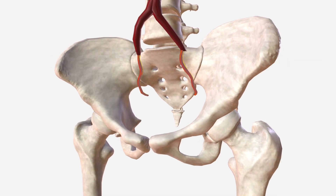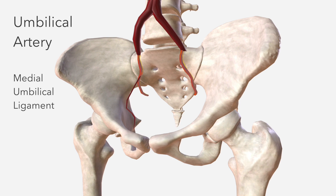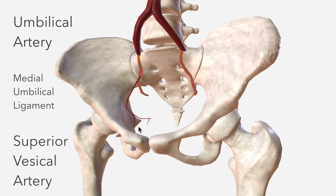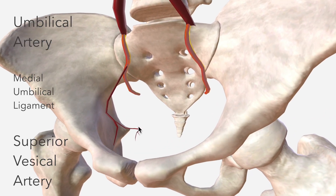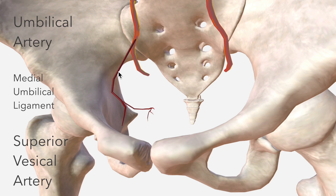Beginning with the anterior trunk, its first branch is the umbilical artery, which is an important artery in fetal circulation but is obliterated distally in post-uterine life. We can identify the obliterated distal end of the vessel as the medial umbilical ligament. More proximally, it gives rise to the superior vesicle artery, which supplies the superior aspect of the bladder. That's the umbilical artery there, giving rise to the superior vesicle.